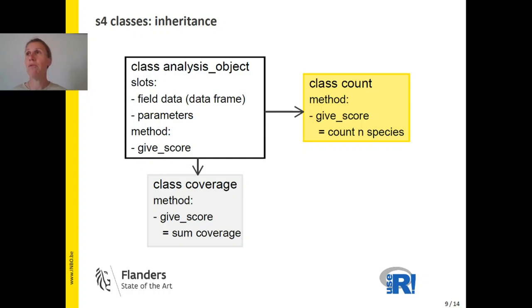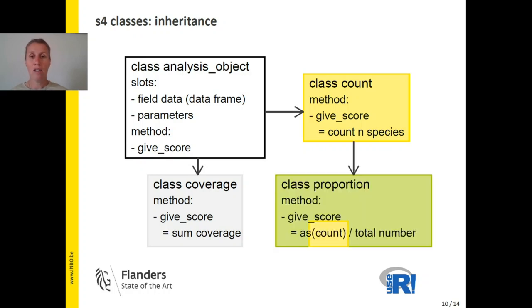Then remember, we also had this mixed class with yellow and green. And here we can also make advantage of inheritance. We can make a green class that inherits from the yellow class. And then indirectly, it also inherits from the class analysis object.